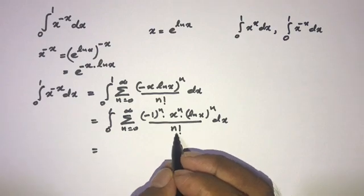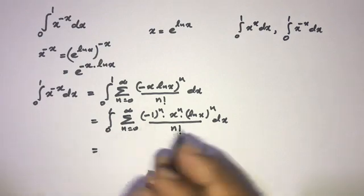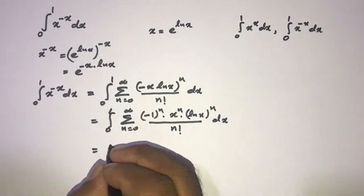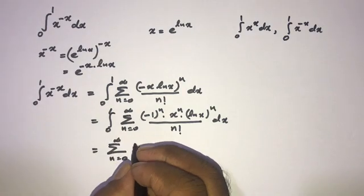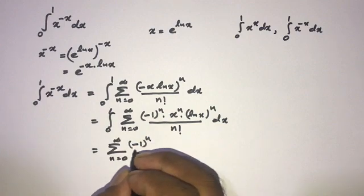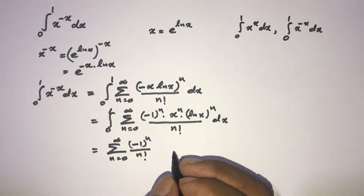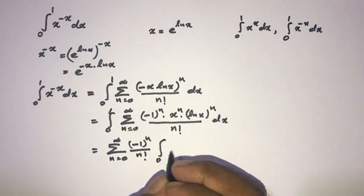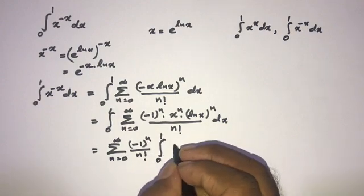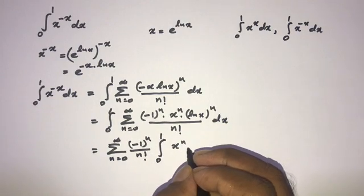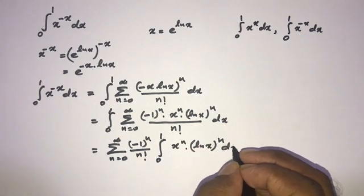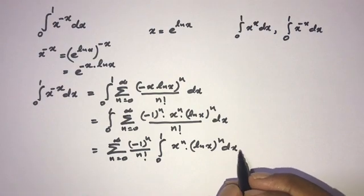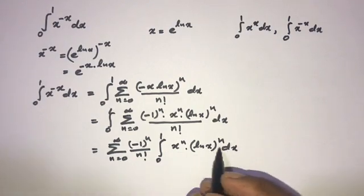Here, (minus 1)^n and n factorial are constants with respect to x, so we can write them outside of the integral. This gives us the sum from 0 to infinity of (minus 1)^n over n factorial, times the integral from 0 to 1 of x^n times (natural log of x)^n dx.